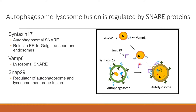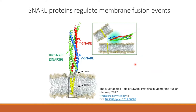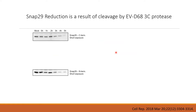The three specific SNARE proteins involved in fusing autophagosomes to lysosomes are: Syntaxin 17, on the autophagosome; VAMP8, on the lysosome; and SNAP29, which is cytosolic. When those three proteins come together you get a fusion event and the autophagosome contents are delivered to the autolysosome. The red, blue, and green SNARE proteins form a coiled structure — SNAP29 is the cytosolic one, and the other two are on membranes.